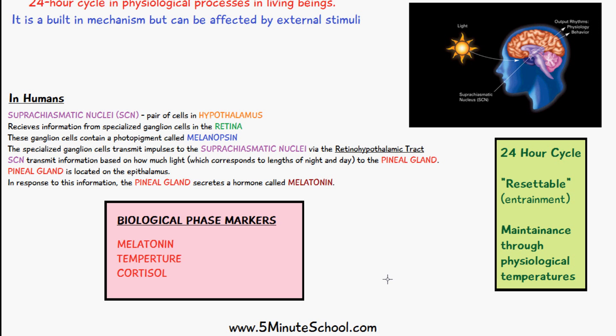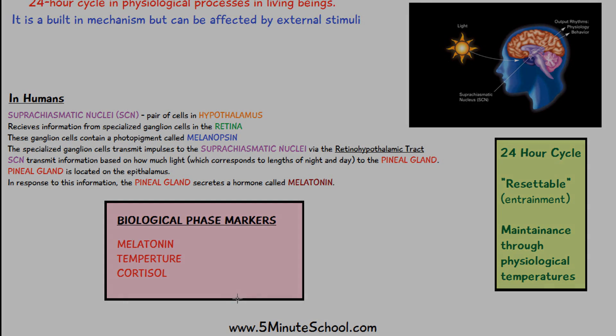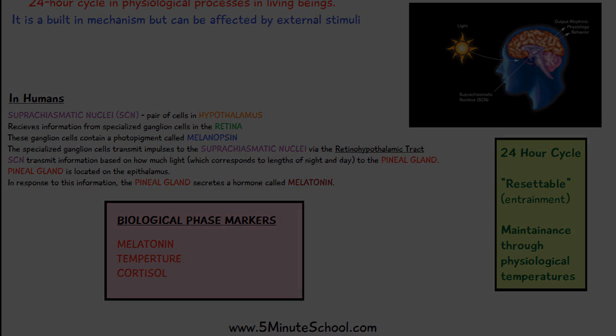Temperature is another phase marker, where your temperature will be the lowest in the morning. Cortisol levels are highest in the morning and reduce significantly in the evening and during the early stages of sleep. These are all key phase markers to indicate how your circadian rhythm is functioning. All three factors can be influenced, and it affects your circadian rhythm as a whole.